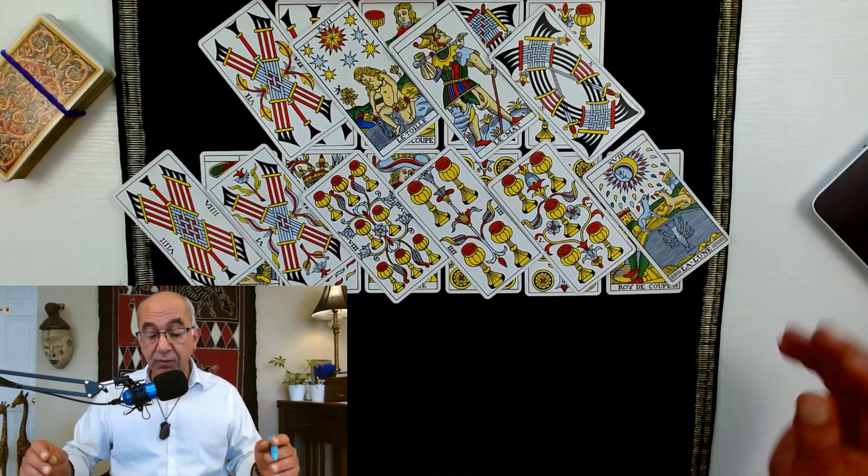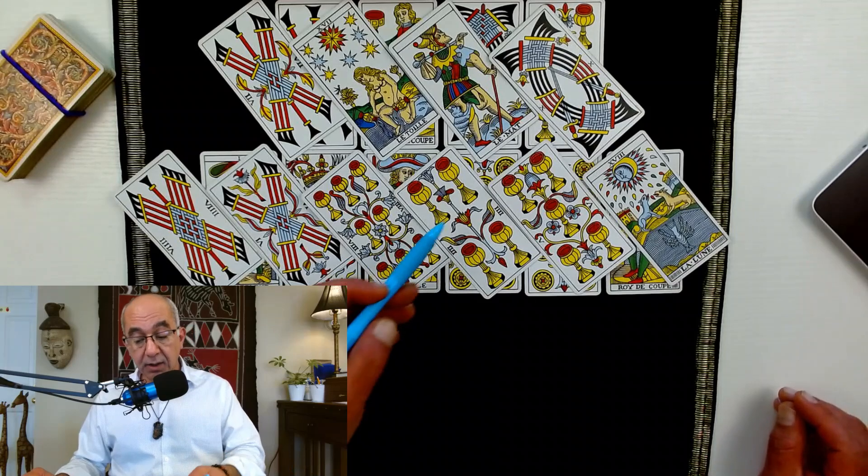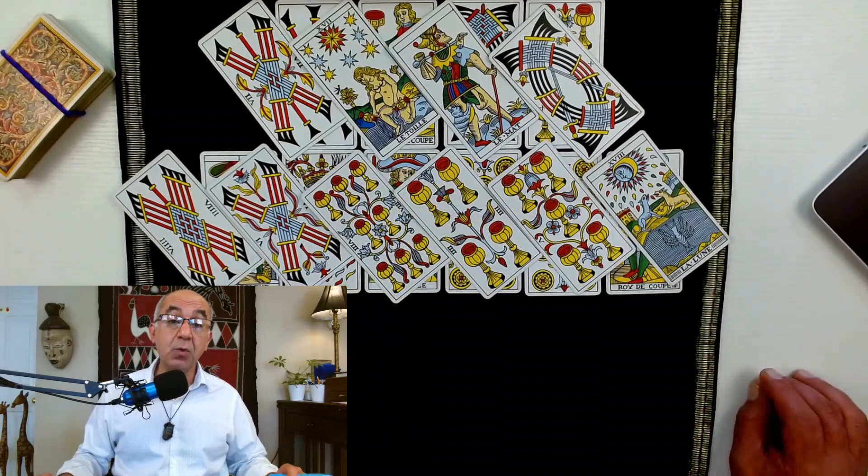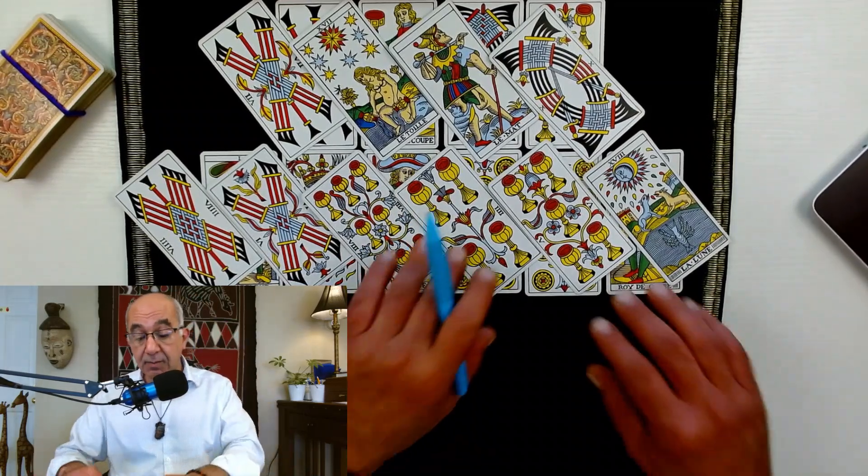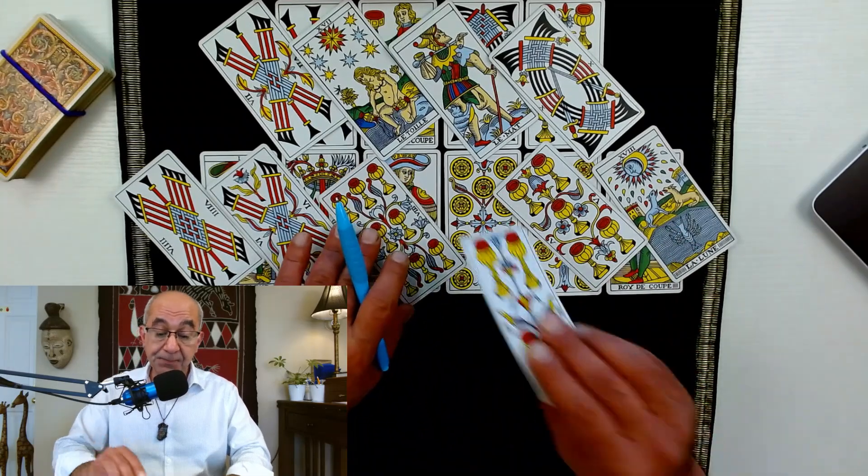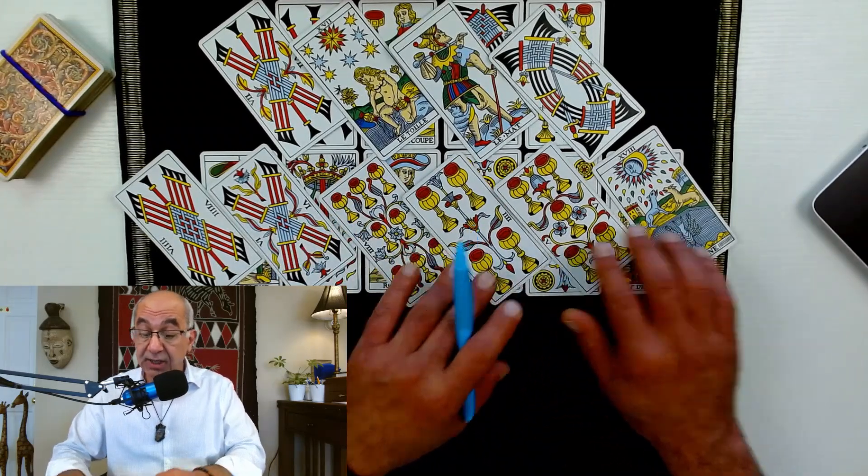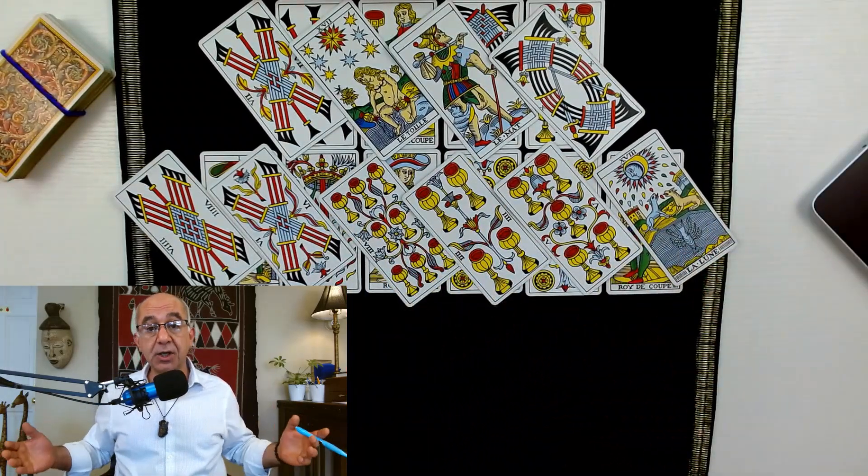There's a promise of a good business case, a good business scenario. Now we have to meet that and continue to remain at the top of Virgo's game. That's the Eight of Cups here.